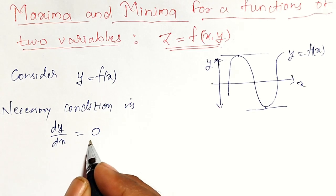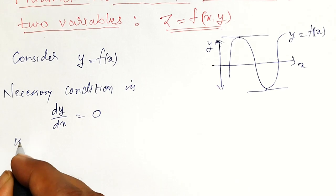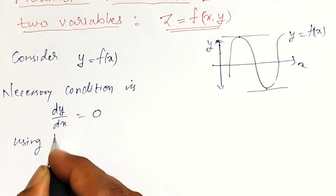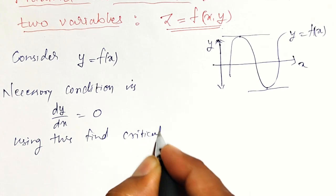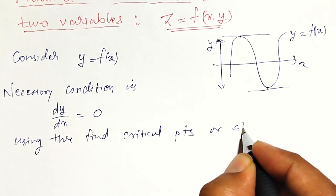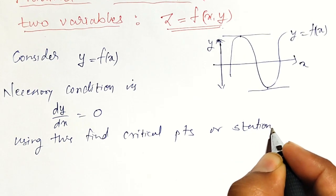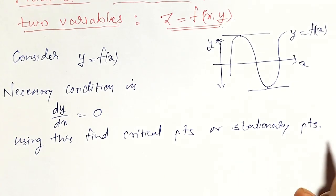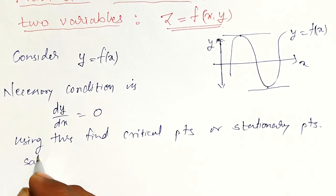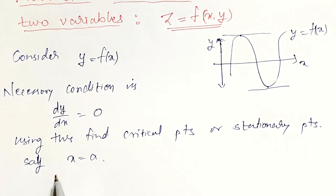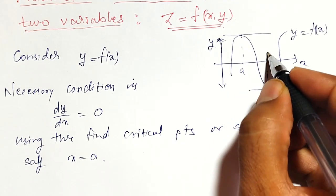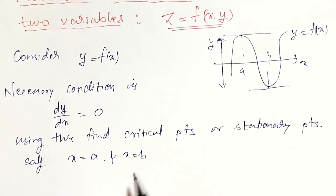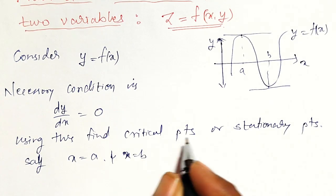Using this condition, we find the critical points, also called stationary points. Say x equal to a and x equal to b — these are called the critical points here.